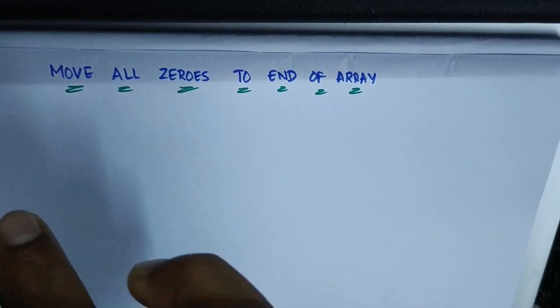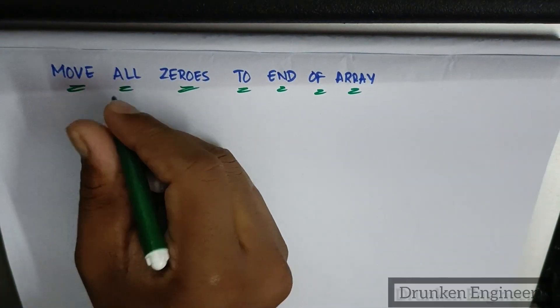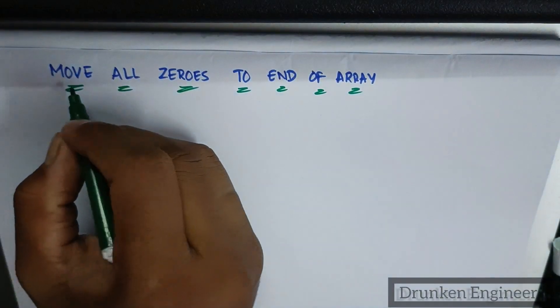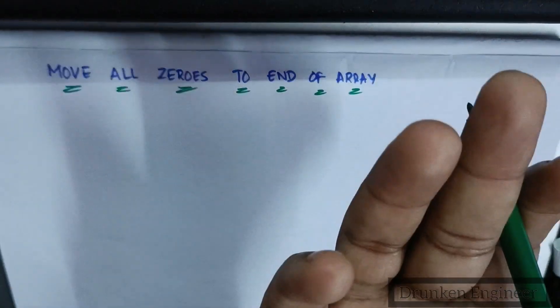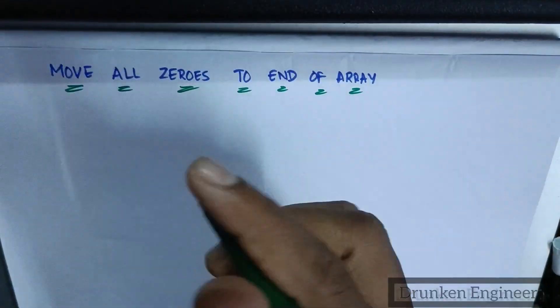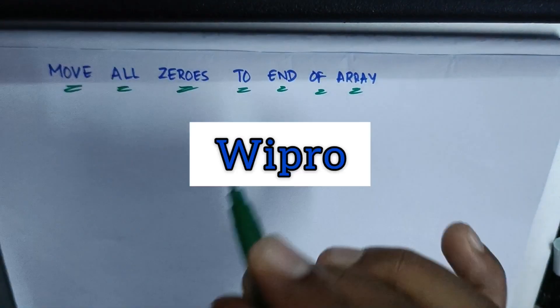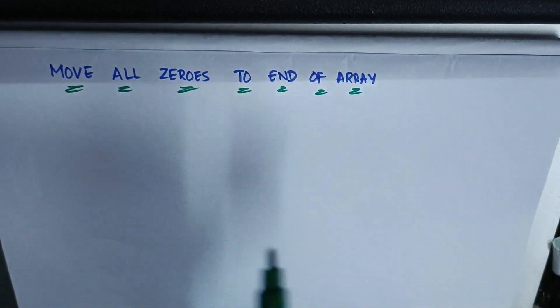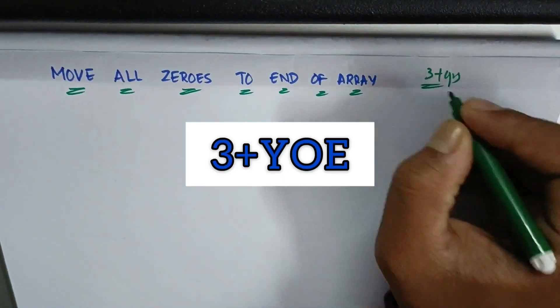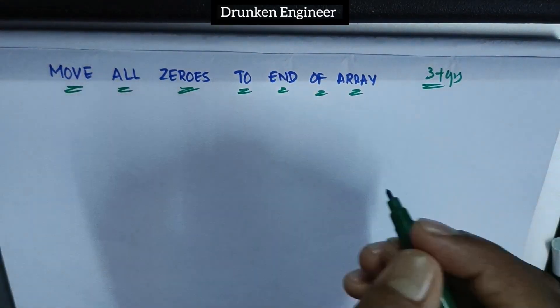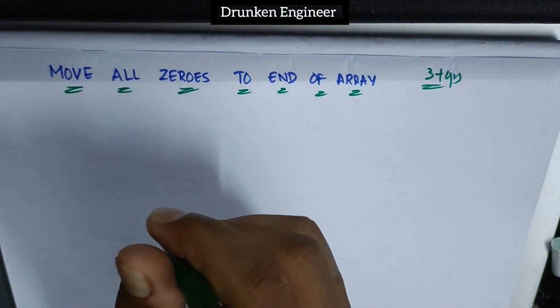Hello guys, welcome back to our channel. Today we're going to talk about a coding question: move all zeros to the end of an array. I personally encountered this question in a Metal exam conducted by Wipro when I had three plus years of experience.